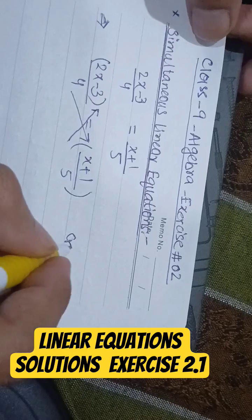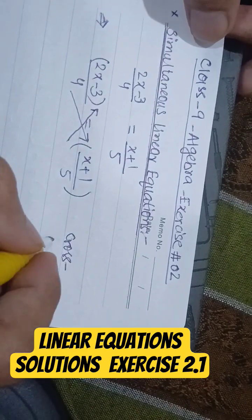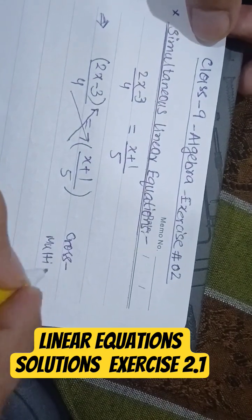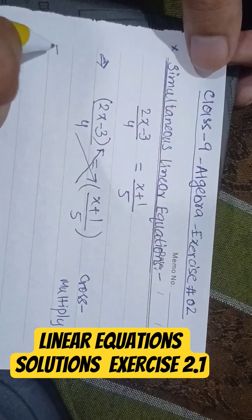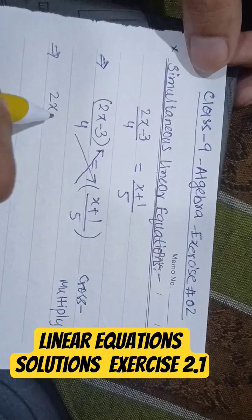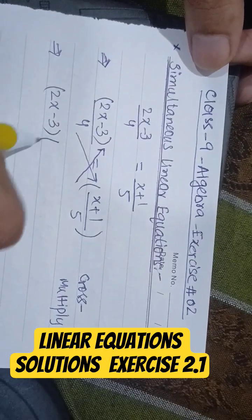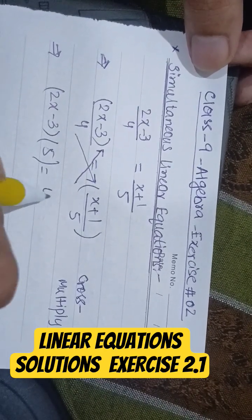So when we cross multiply, the equation becomes 2x minus 3 into 5 is equal to 4 into x plus 1.